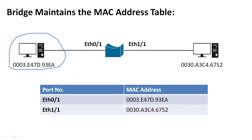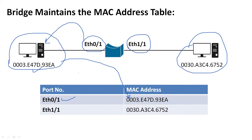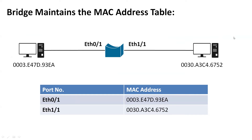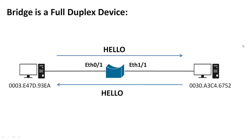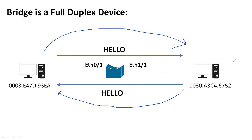A bridge maintains a MAC address table like this: assuming a PC has MAC address 0003, it creates a table mapping MAC addresses to their interfaces — for example, this interface is connected to the PC with this MAC address, and another port is connected to a PC with a different MAC address. The bridge maintains this table based on MAC address and the interface connected, which is why there is no broadcast after the first time. The major issue with the bridge is that it only has two ports.